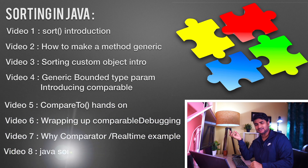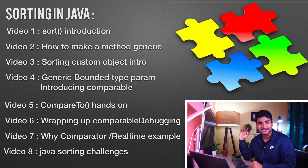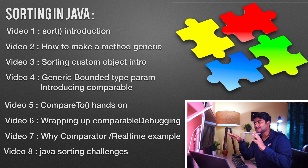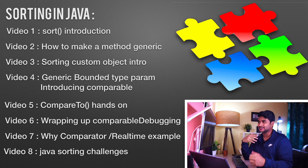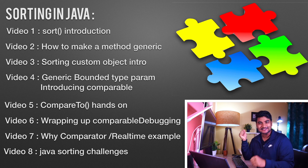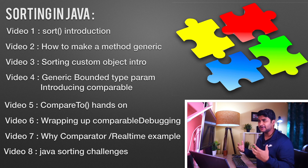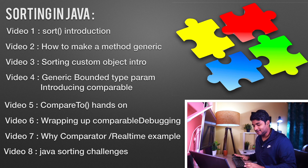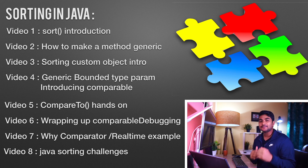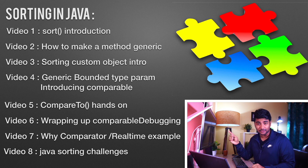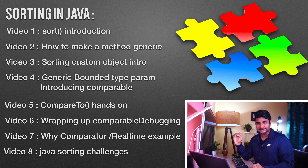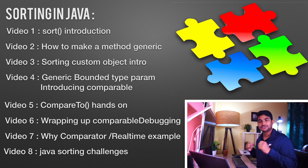There are a lot of things in sorting — quicksort, mergesort, all those data structure things we learnt in college. But Java makes things pretty easy for us. If we know about the Comparable interface, Comparator interface, and the Collections class sort method, things are pretty easy. Sorting is one of the most frequently asked questions in Java interviews — a very common FAQ and a popular interview question.